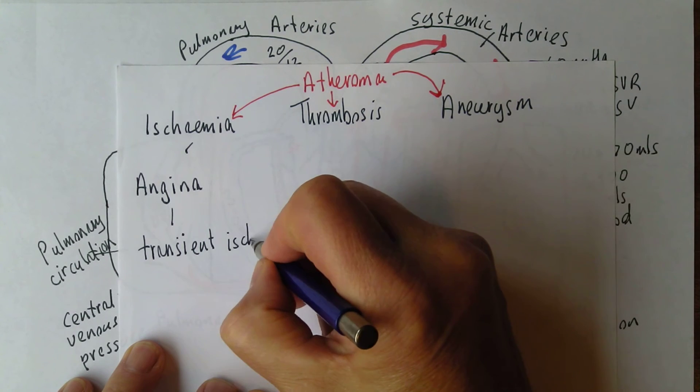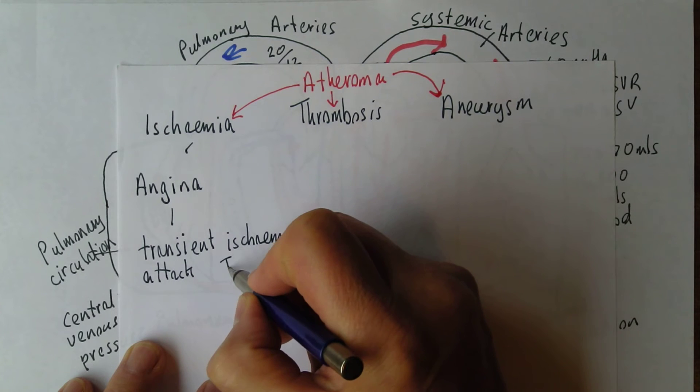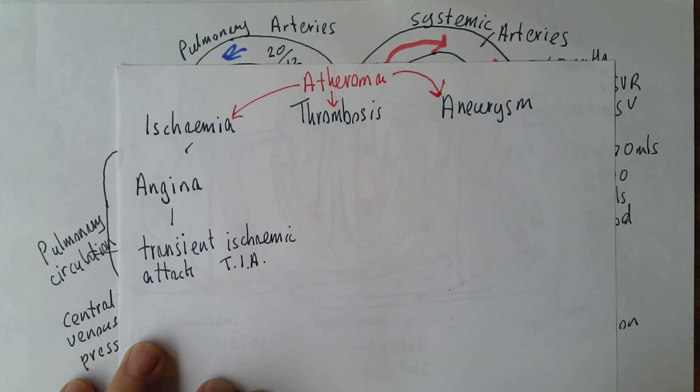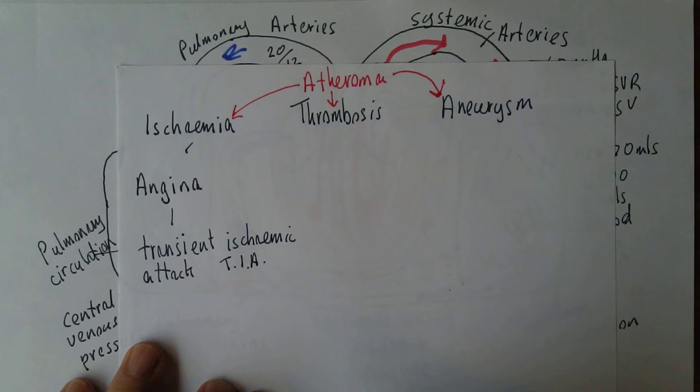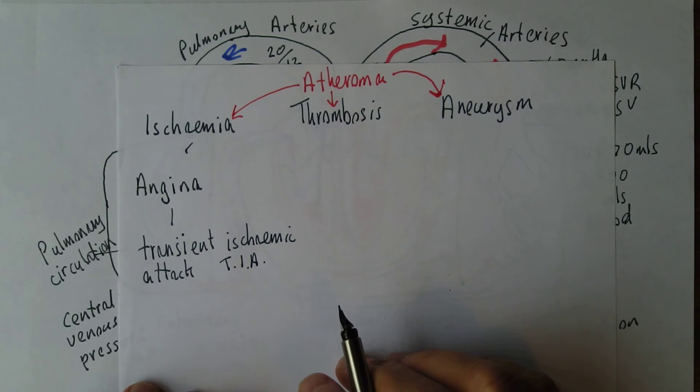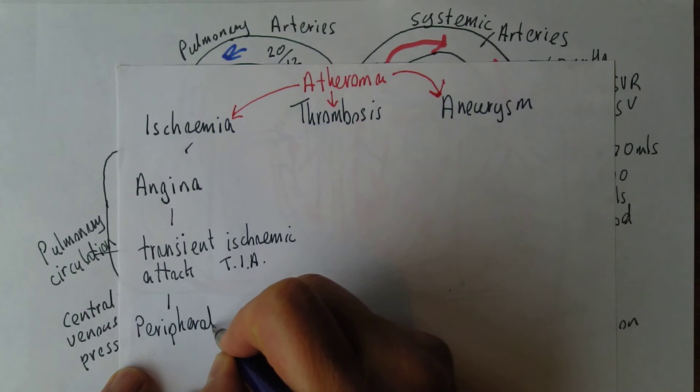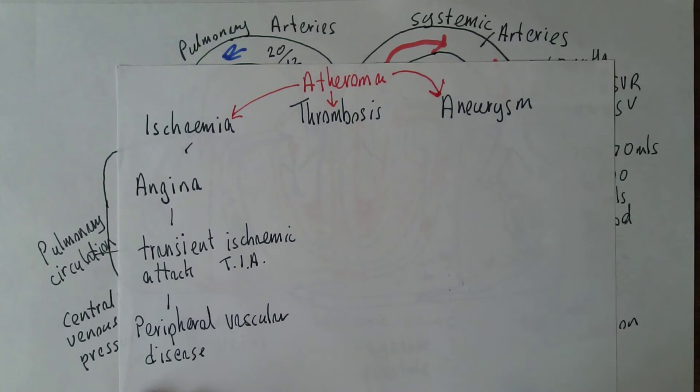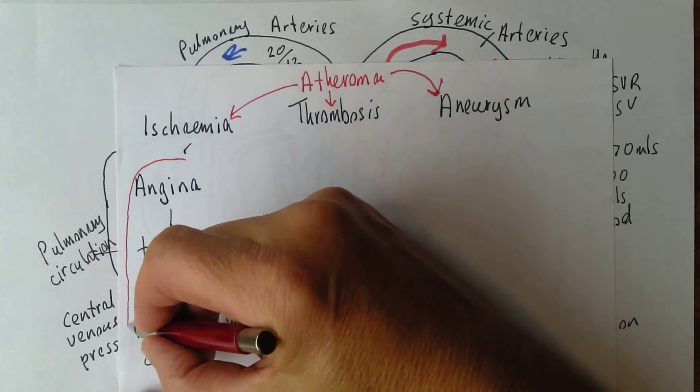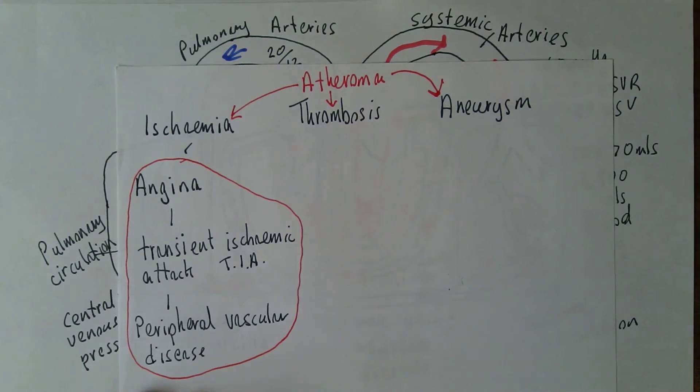Transient ischemic attack, TIA, is caused by reduced blood supply to the brain for a period of time, giving features very similar to a cerebrovascular accident, but they resolve because they're caused by ischemia as opposed to infarction. Another one we see quite a bit is peripheral vascular disease, where there's reduced blood supply particularly to the limbs. These are all complications of ischemia, very common conditions. There's others, but those are probably the common ones, ischemia caused by the atheroma.